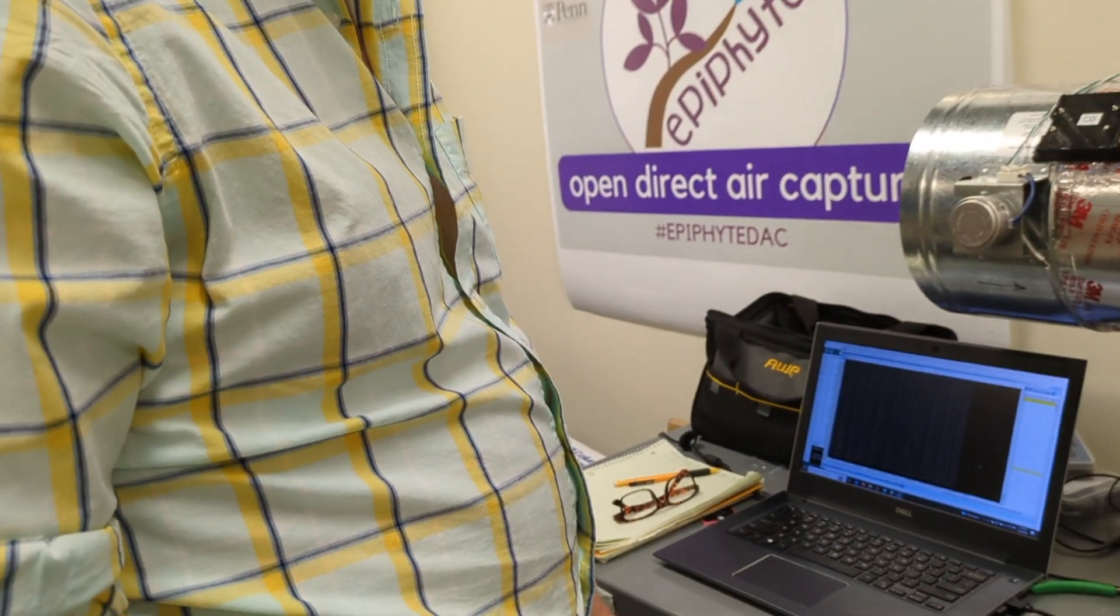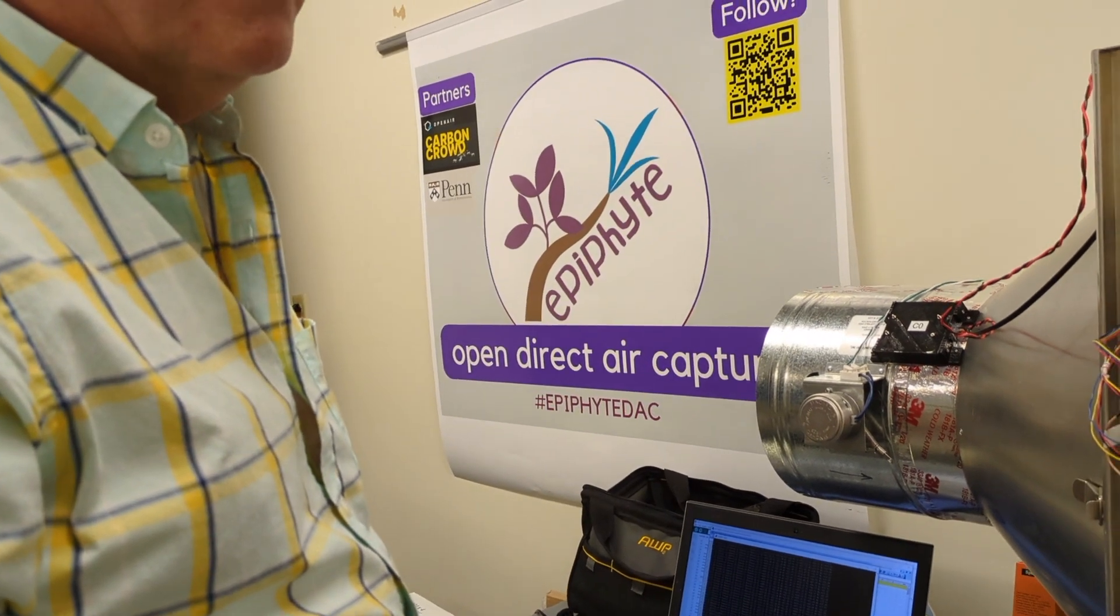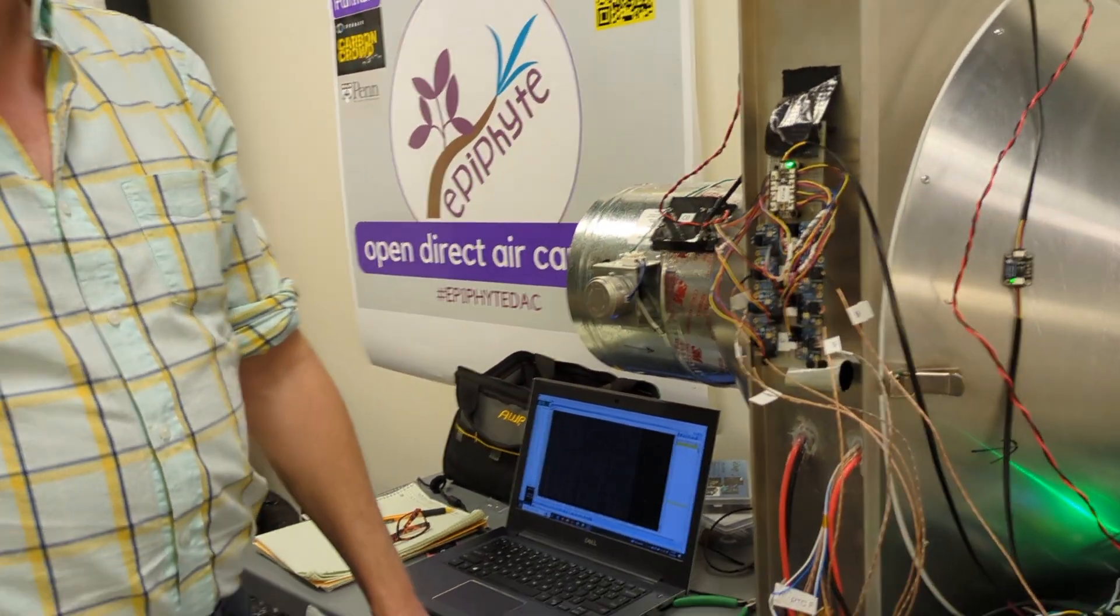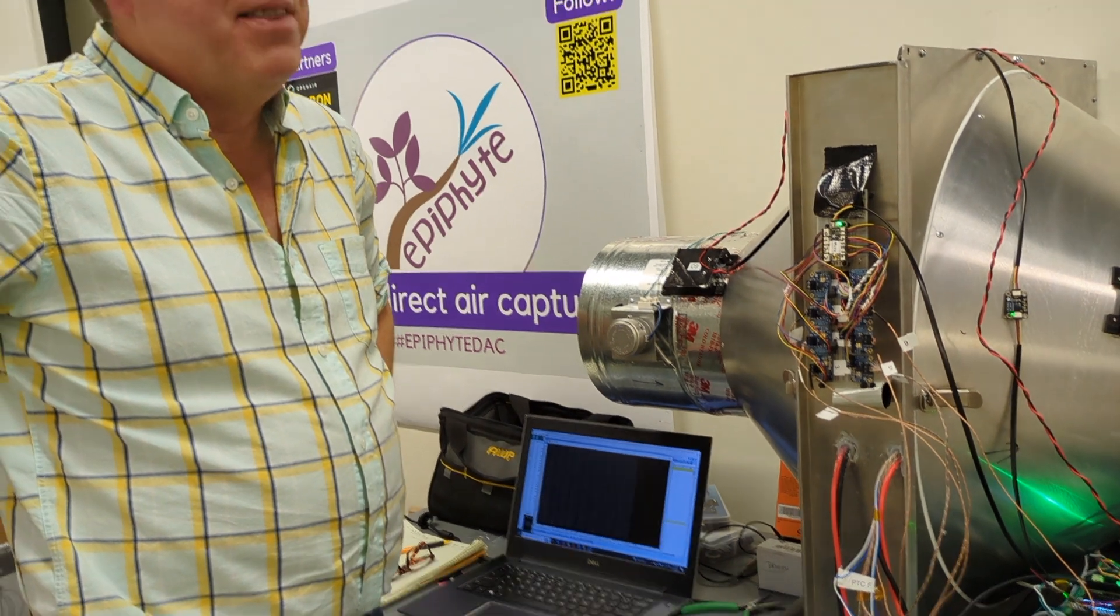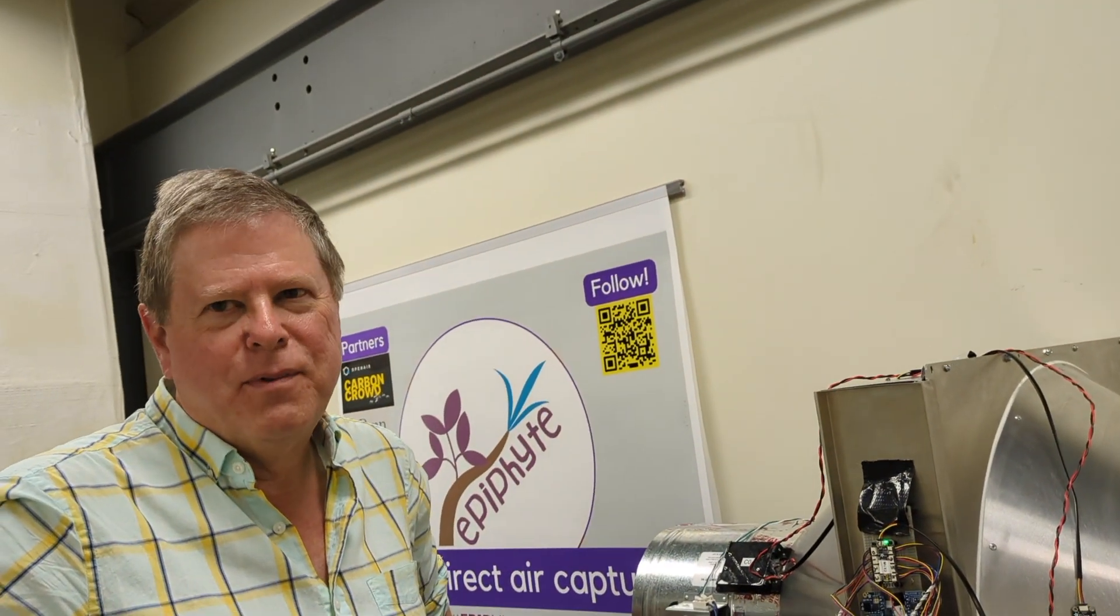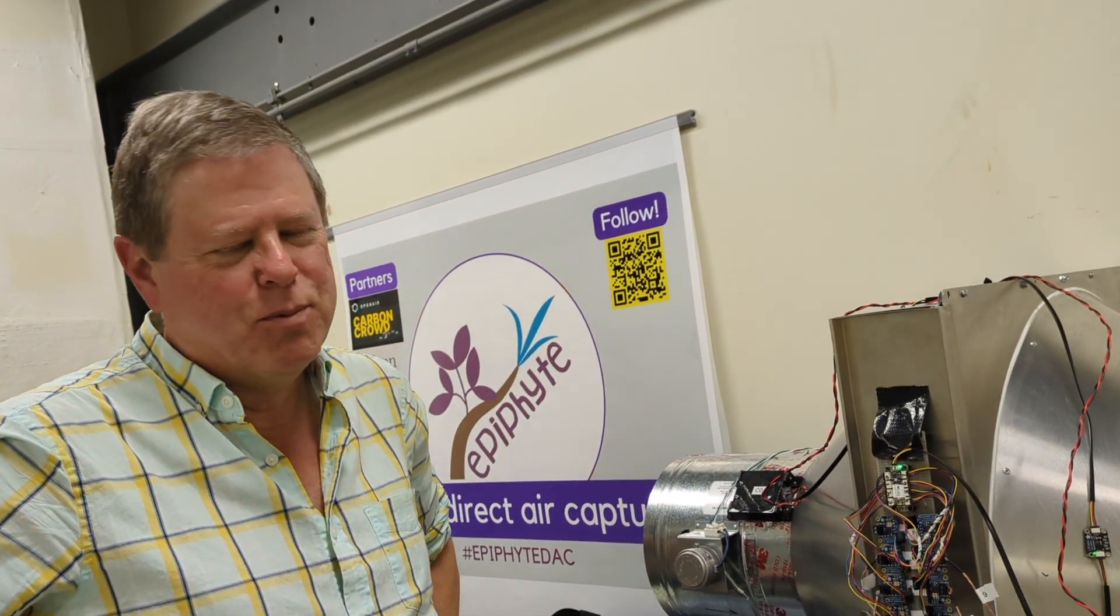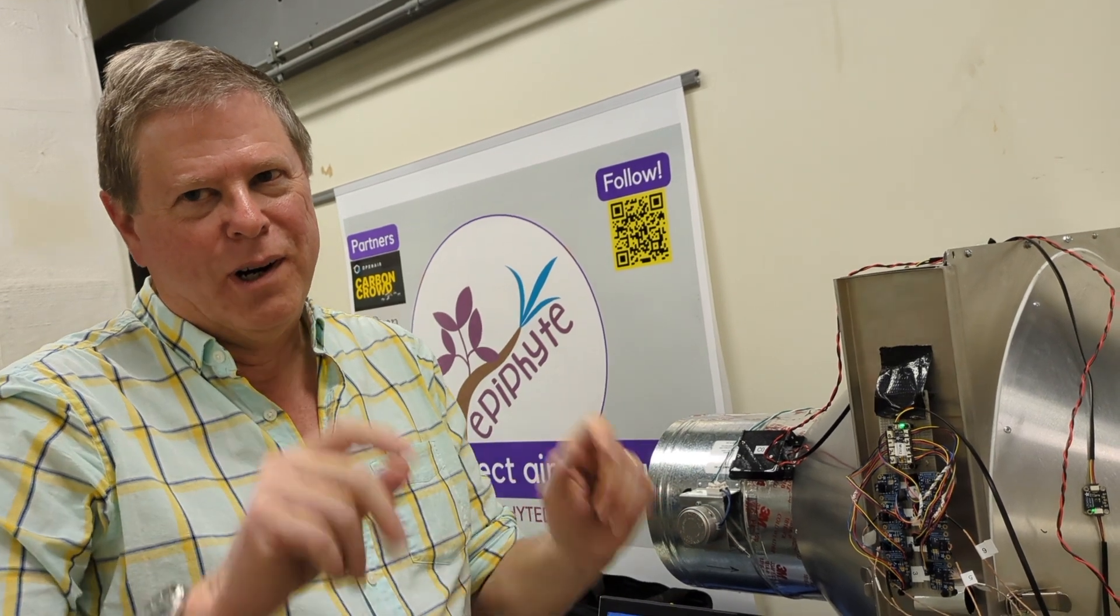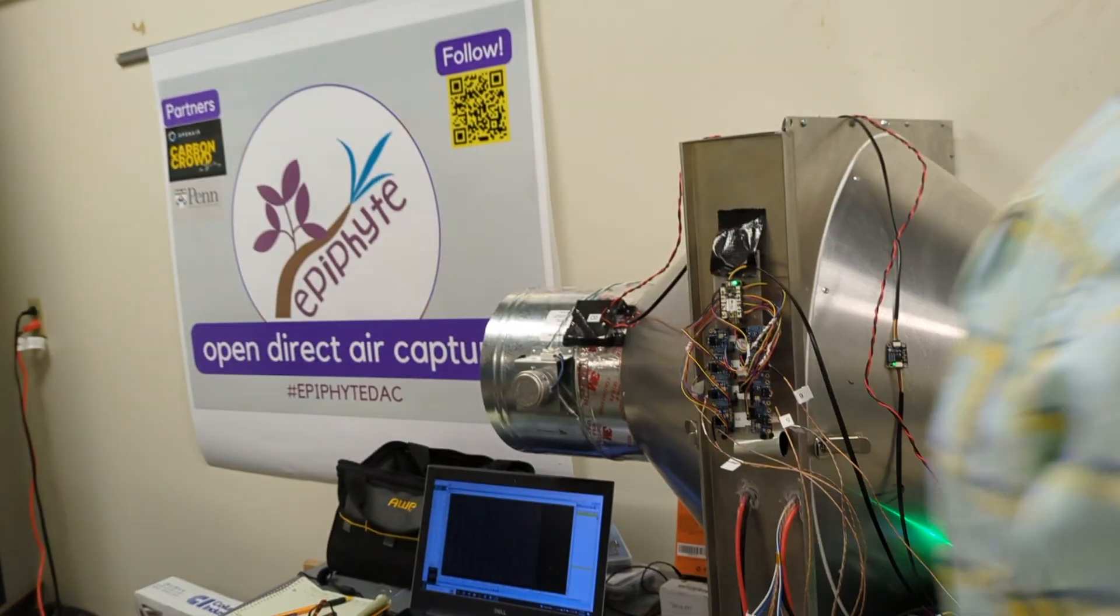Right. But that indicates that the sorbent isn't full if we're still absorbing water. So, I think it's full for CO2, but it still has room for a little more water. It likes water more. Fair. That's what we're using.